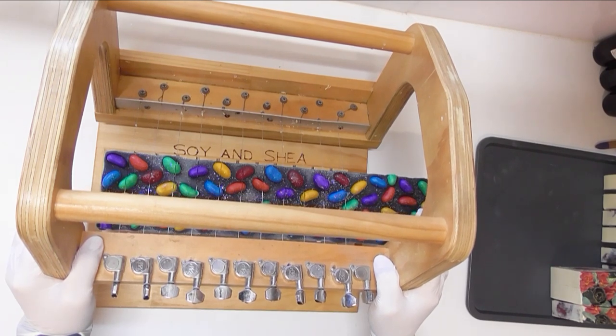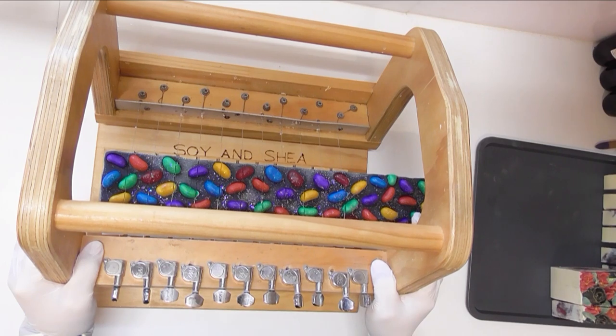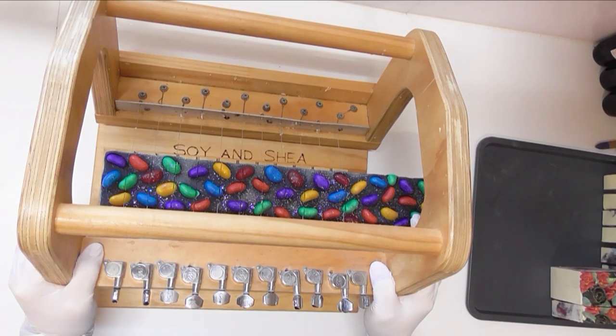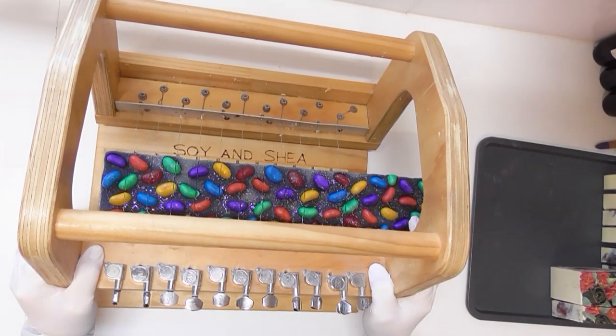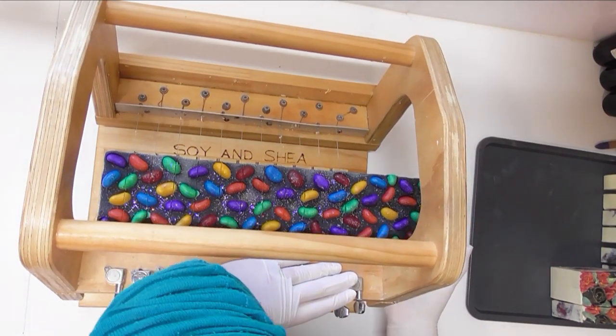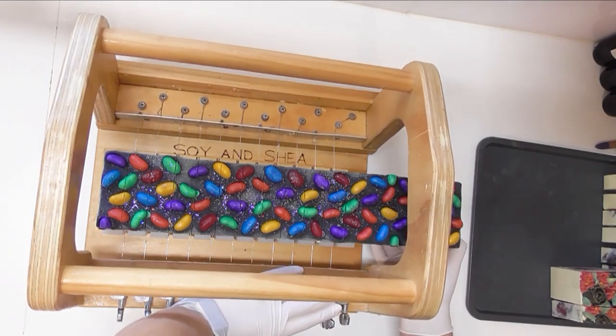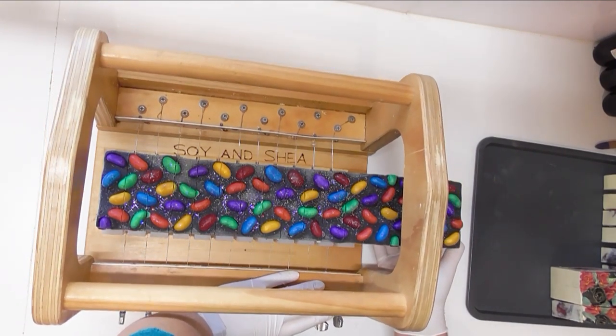I am going to go through this top bit nice and slowly because of all of that melt and pour soap. Hopefully it won't ping. It is stuck on one of them but I don't know which. I should have turned it on its side but too late now. We are going through right through all that melt and pour. Let's get cut through and then we'll take a look at the inside.